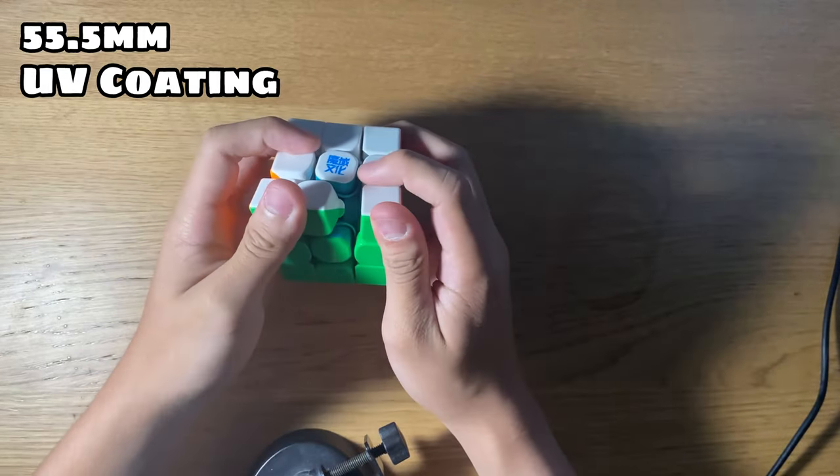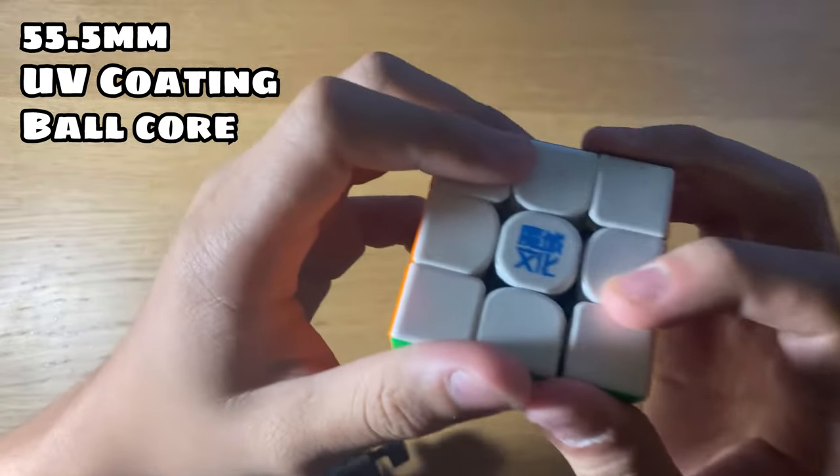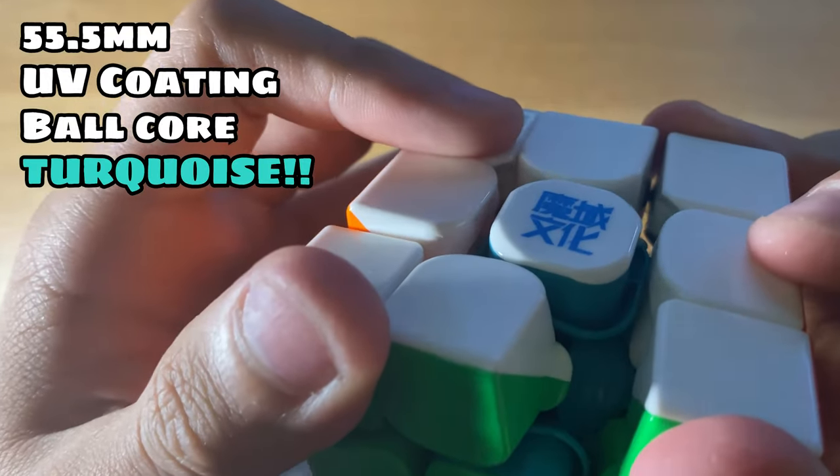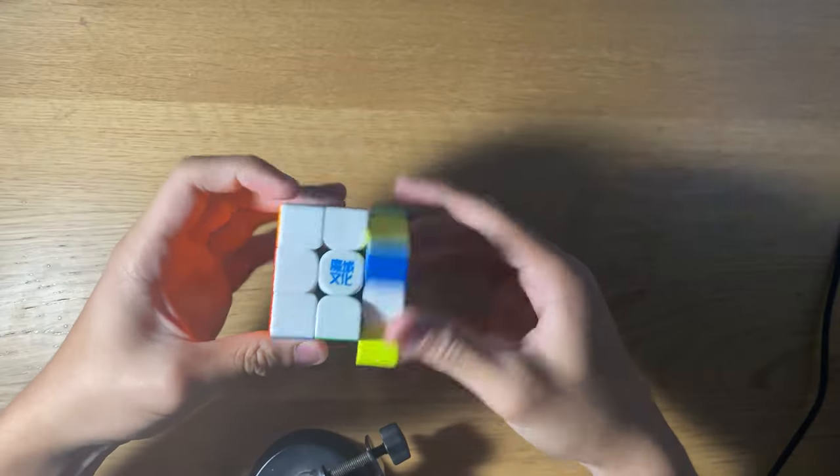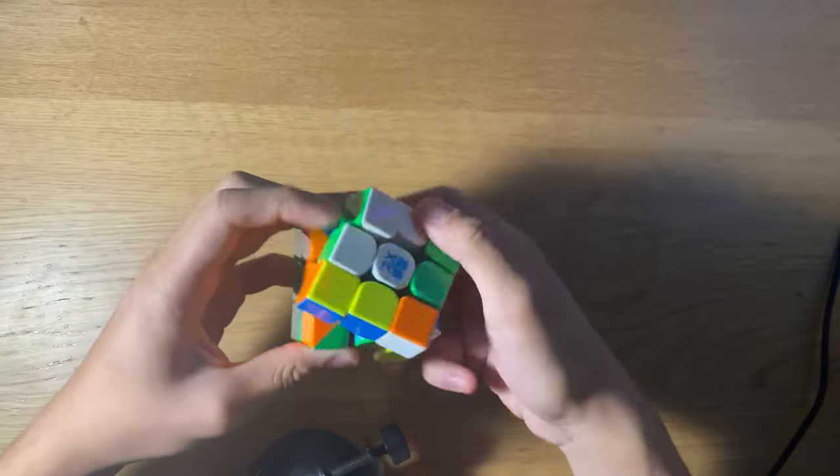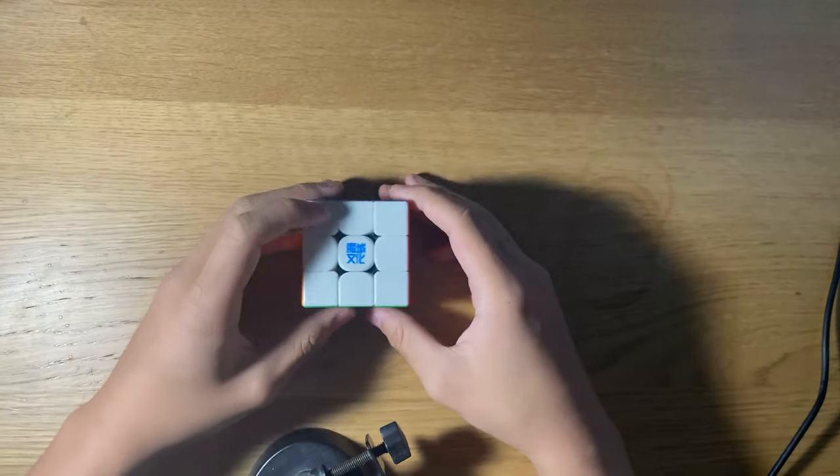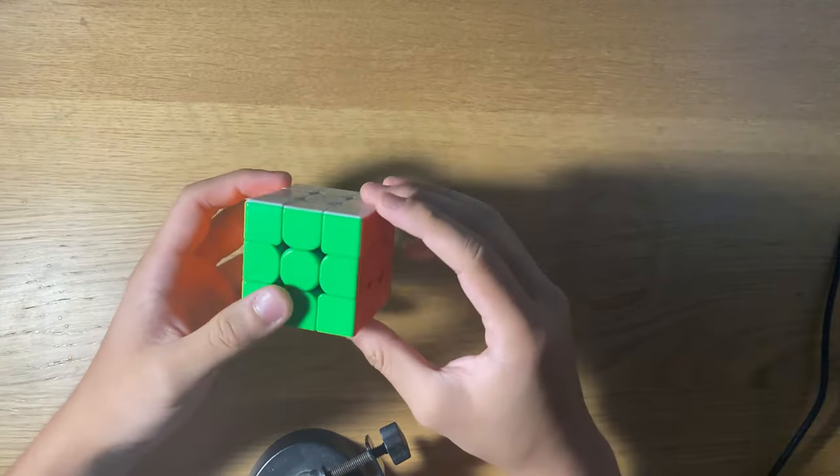And the insides are turquoise if you can see it. The turning feels like it doesn't feel like a usual Moyu cube because I think because of the new ball core and the new repelling magnet for the edges.